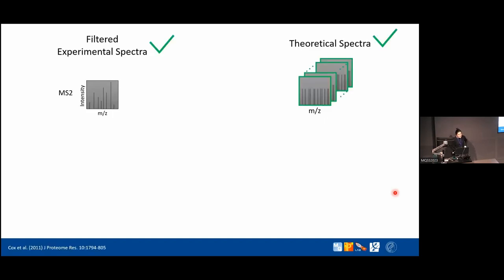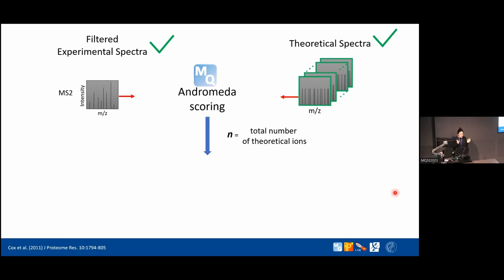Now it's time to do the Andromeda scoring. We have filtered experimental spectra and all theoretical spectra from the FASTA database. Every Andromeda score calculation is between one experimental spectrum and one theoretical spectrum. What comparing two spectra means is aligning them on the m/z axis and counting how many peaks match — with some mass tolerance. This gives two key numbers: n (the total number of theoretical ions) and k (the number of matching ions).